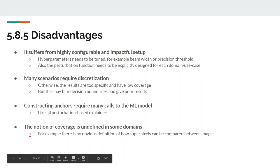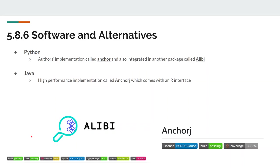Lastly, the notion of coverage is undefined in some domains. For example, there is no obvious or universal definition of how superpixels in one image compare to such in other images. Finally, there are currently two implementations available. Anchor, a Python package that is also integrated in the alibi package, and a Java implementation. The first one is the anchors algorithm's author's reference.